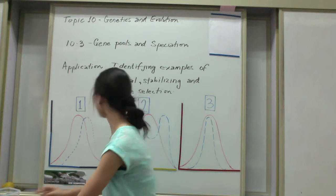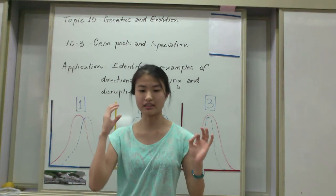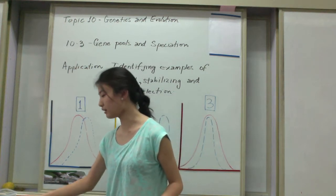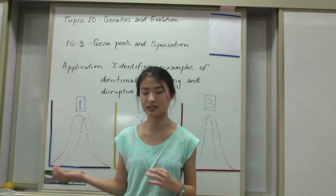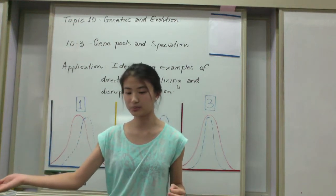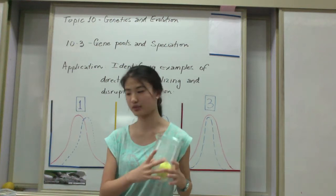So disruptive selection is when the two extreme traits are selected by natural selection. As you can see, the smaller beaks will thrive just because it doesn't have as much competition, and the other extreme trait is the bigger beaked bird which can effectively get the big fruits.